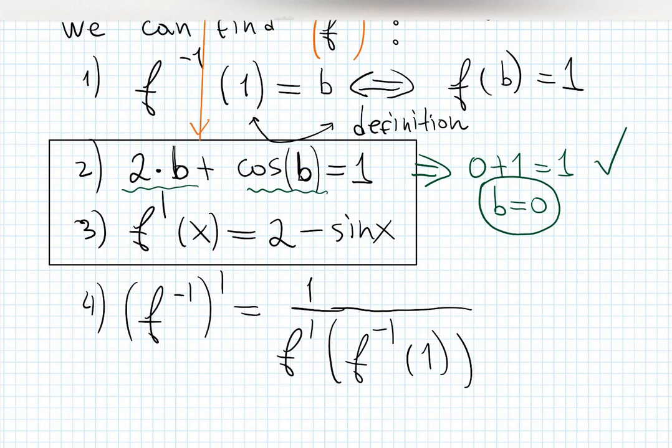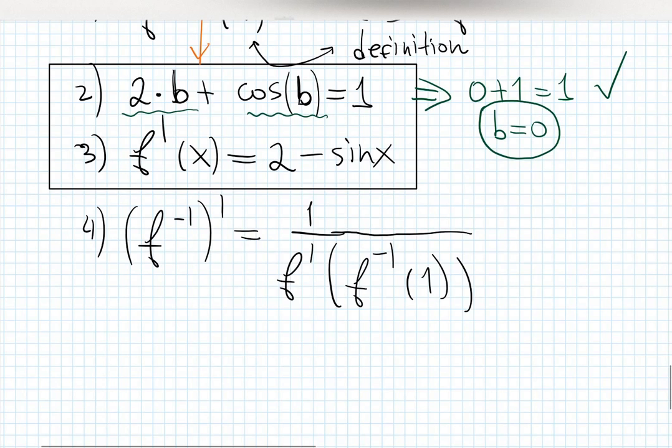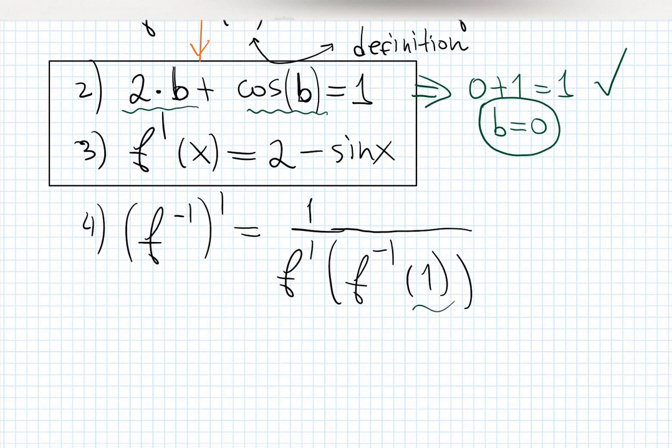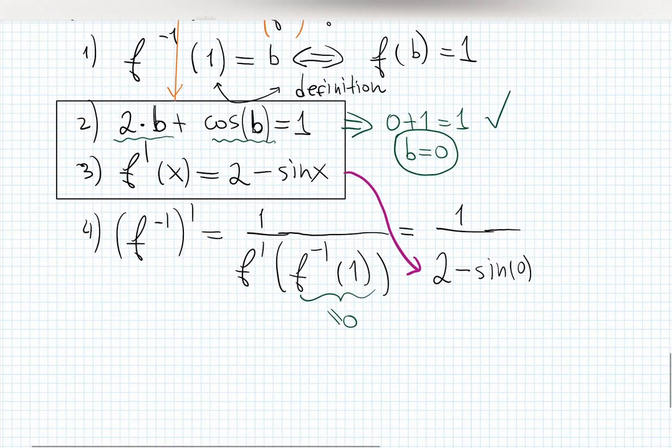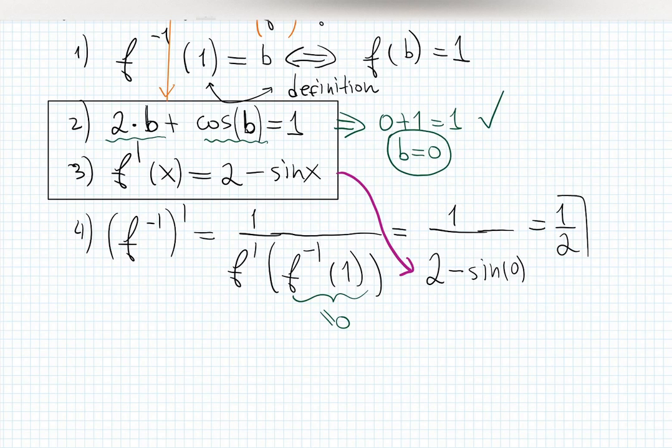B equals 0 works, so this thing inside is 0. Then it becomes 1 over f'(0). F prime comes from number 3. That means 1 over (2 - sin(0)) and that equals 1/2. This is the result.